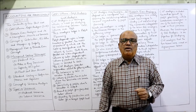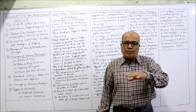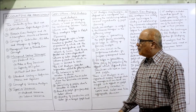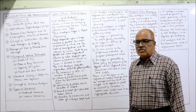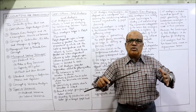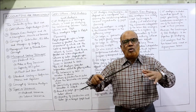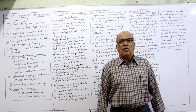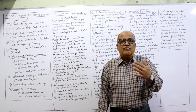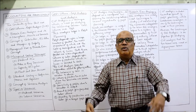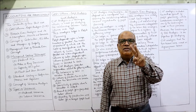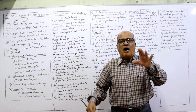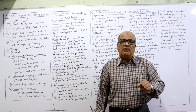Cost, volume, and profit are not independent — they are interdependent. This analysis helps in profit planning; every business management wants to estimate how much profit they can earn. Profit depends on a large number of factors, the most important being cost of manufacture and the volume of sales. So, leaving aside all other factors, we focus on how profit is affected by cost of manufacture and volume of sales.